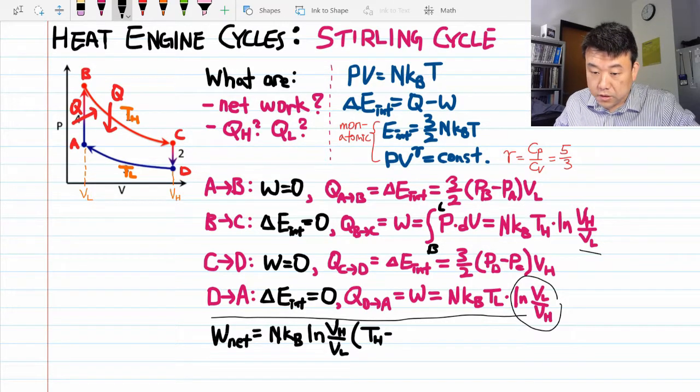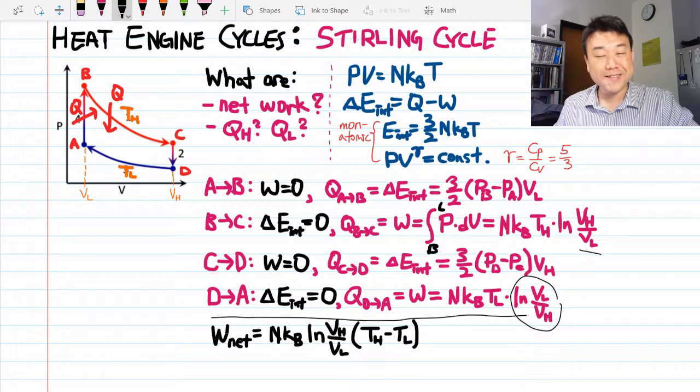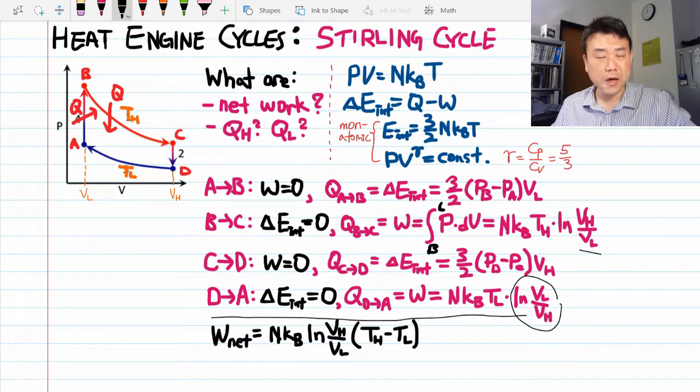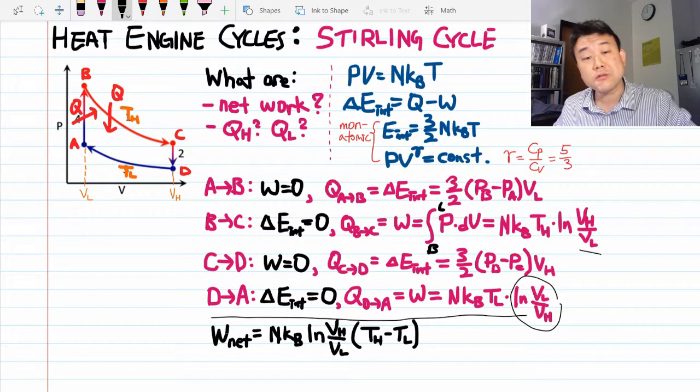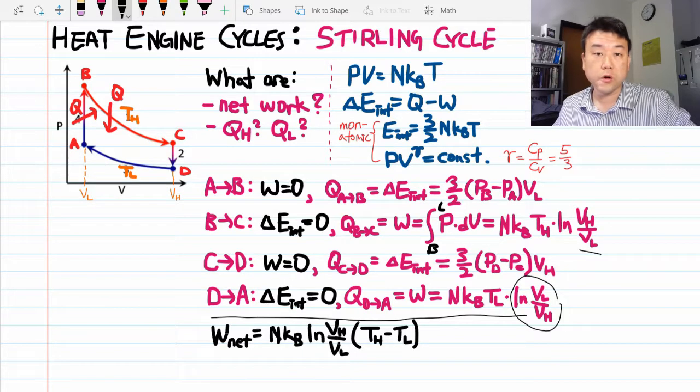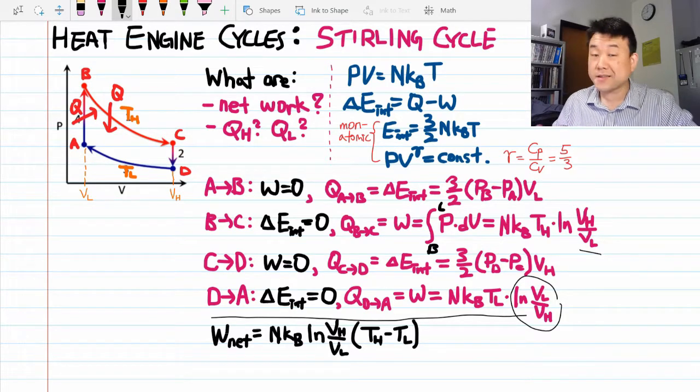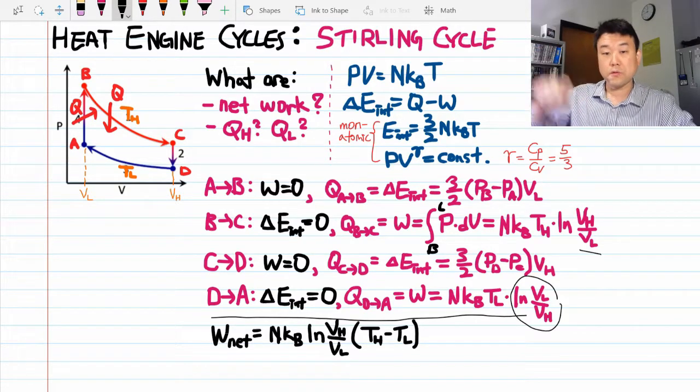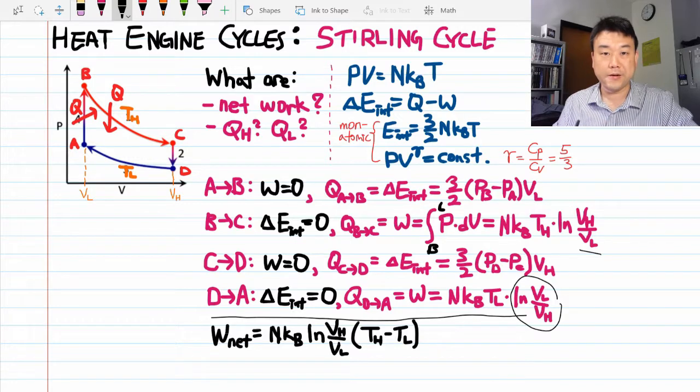If you remember the result from Carnot cycle, this is the same result as the Carnot cycle result. If you are surprised, I hope you are not surprised because in the Carnot cycle the work done along the adiabatic paths canceled out. So whether it's adiabatic or isochoric, it kind of doesn't make a difference since they cancel out to zero either case.